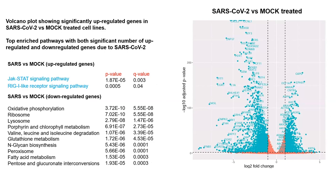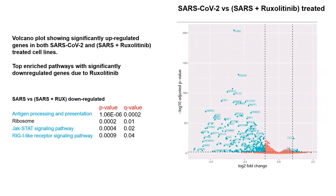This slide shows the volcano plot of the comparison between SARS-CoV-2 and mock-treated cell lines, highlighting our pathways of interest — the JAK-STAT signaling pathway and the RIG1-like receptor signaling pathway — with significant differences between these cell lines. Also highlighted are the four significantly different pathways in which a number of genes were down-regulated due to ruxolitinib, with our pathways of interest marked in blue.